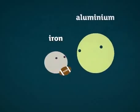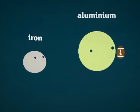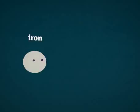In the thermite reaction, aluminium will push out or displace the iron from the iron oxide. This reaction transfers lots of energy to the surroundings. This causes the iron to melt.